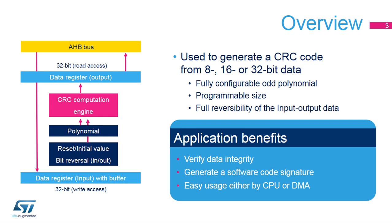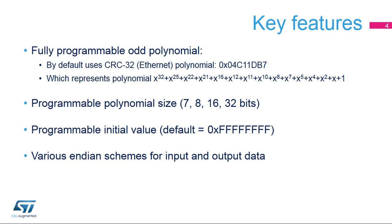Additionally, the DMA controller can be used for back-to-back CRC calculations over a large block of data while the CPU is performing other tasks or in sleep mode. The CRC calculation unit features a fully programmable odd-value polynomial with a programmable size of 7, 8, 16, or 32 bits. The initial value is also fully programmable, allowing for very flexible runtime CRC code generation.